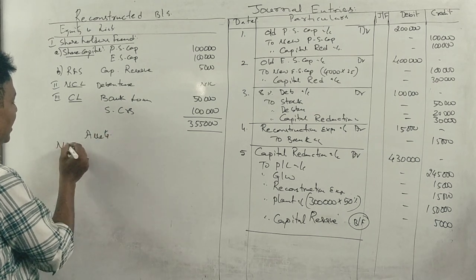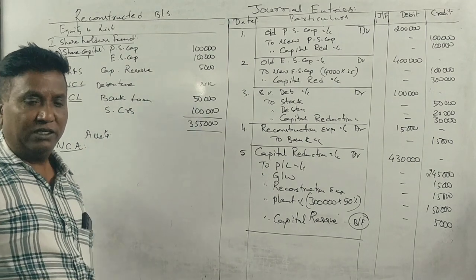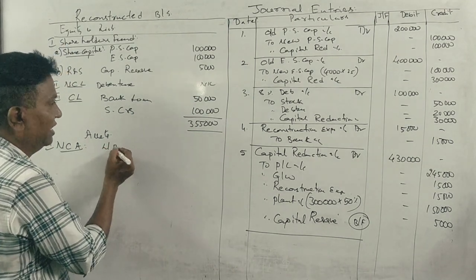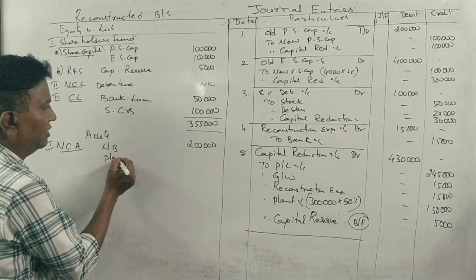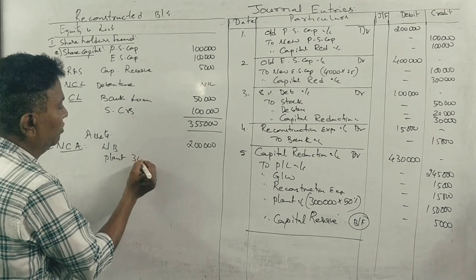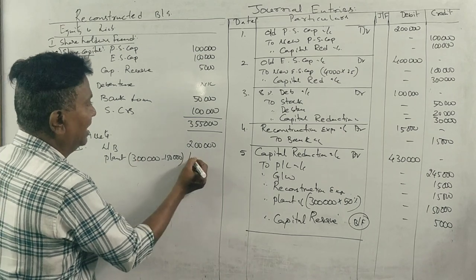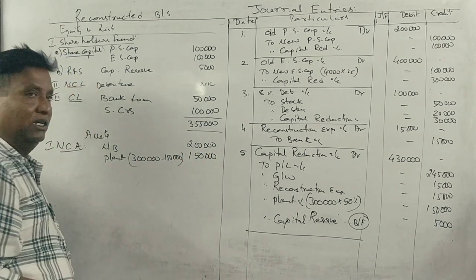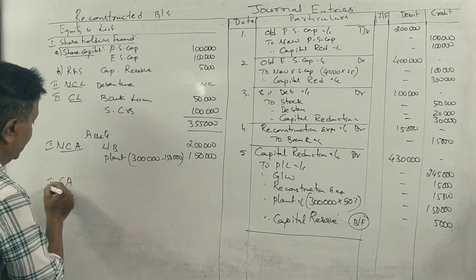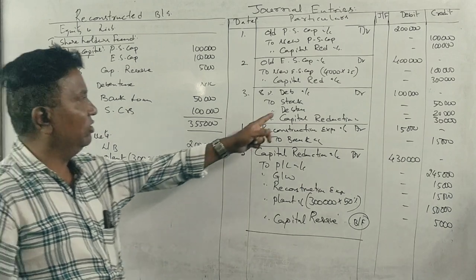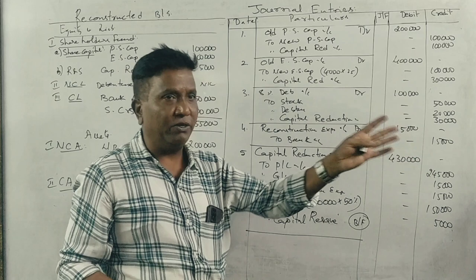On the assets side: non-current assets include land and buildings, and plant. Under current assets: debtors and cash.